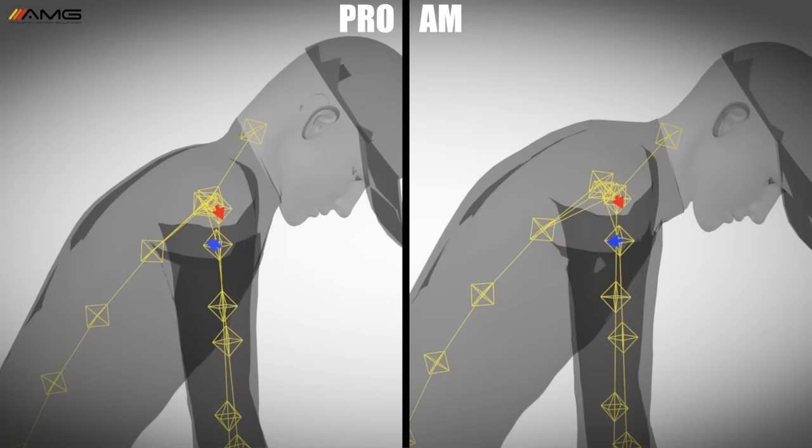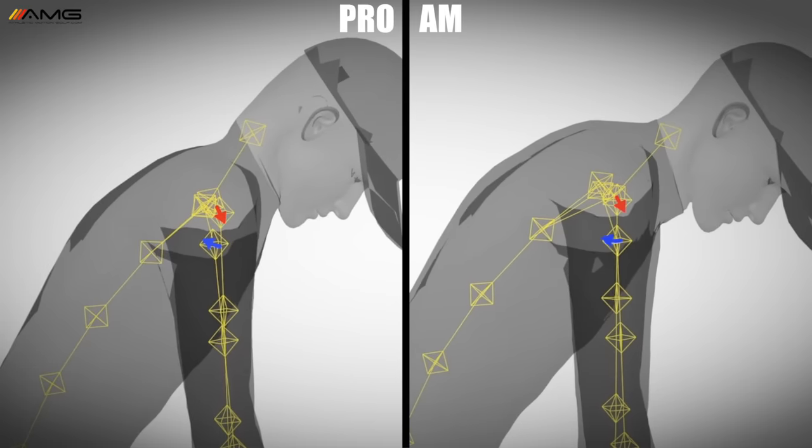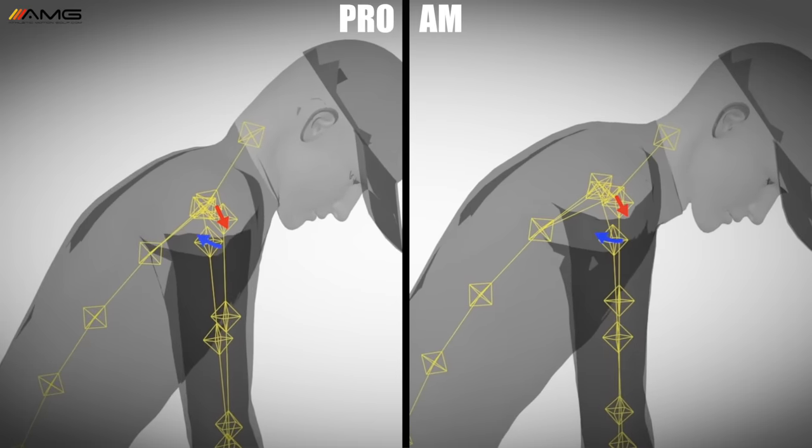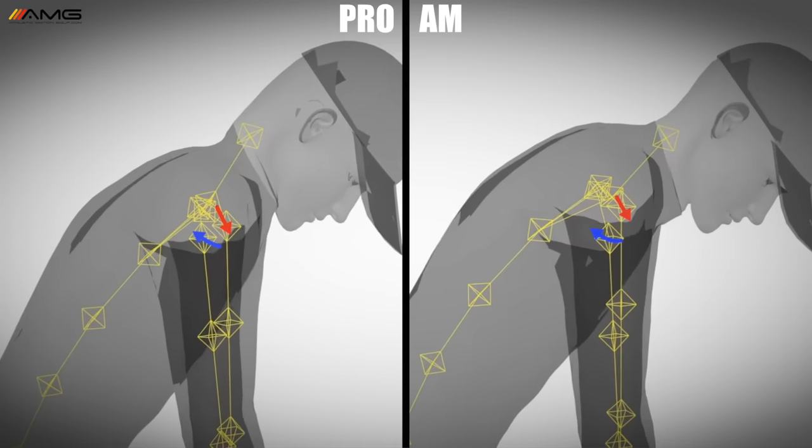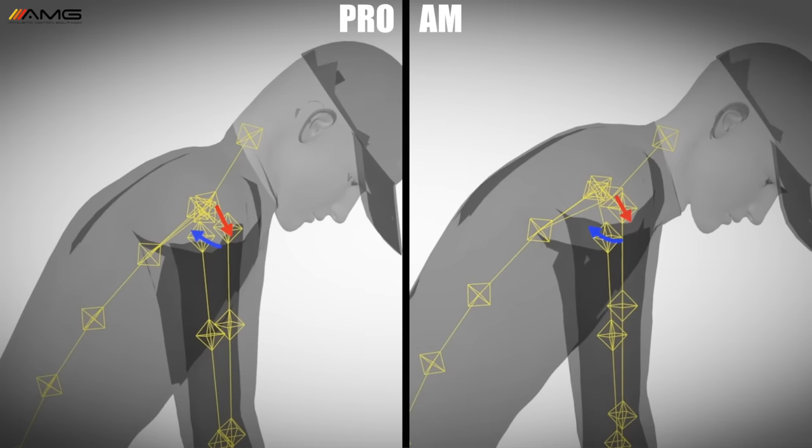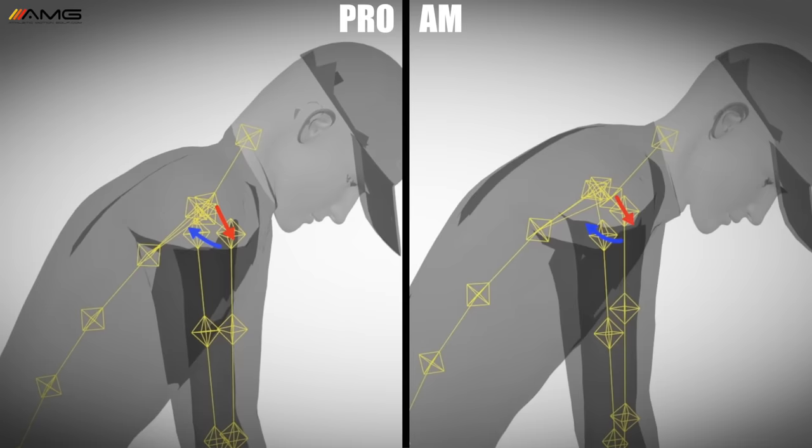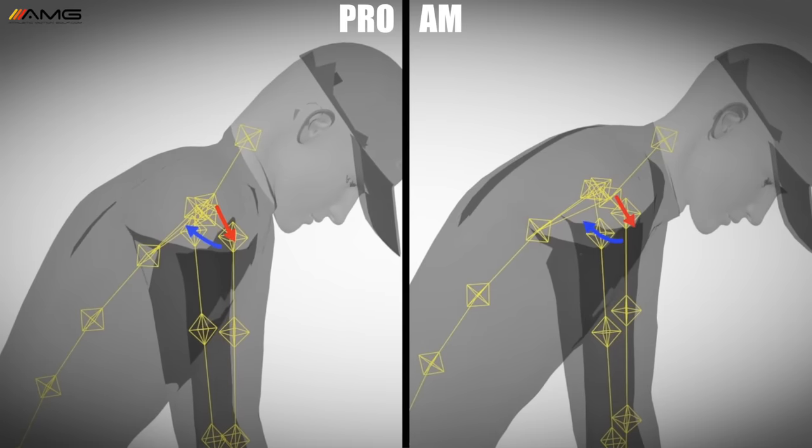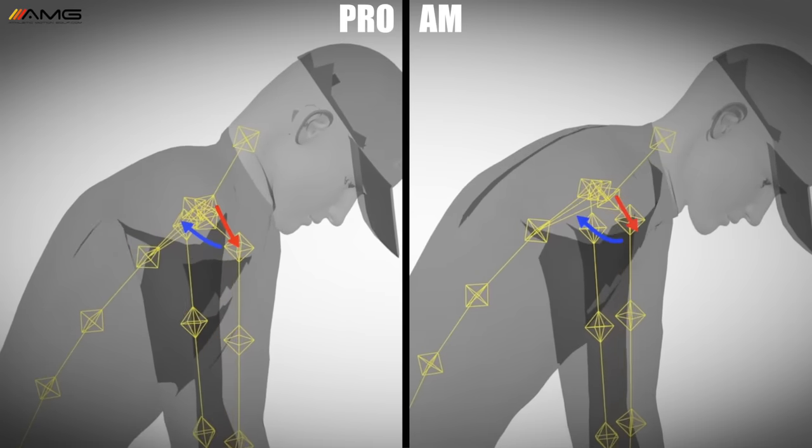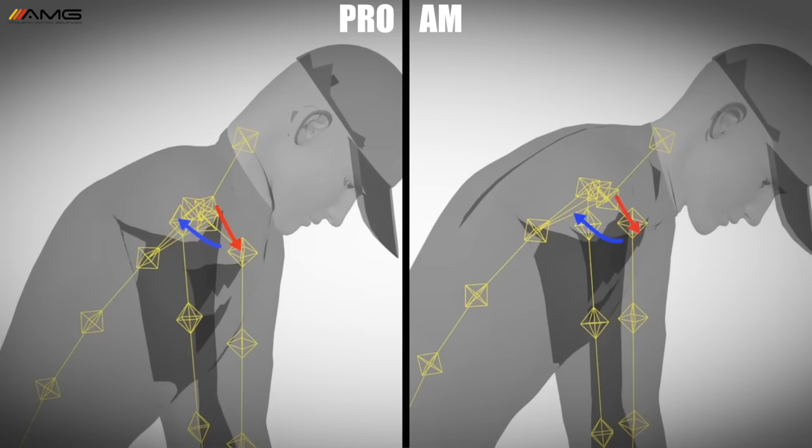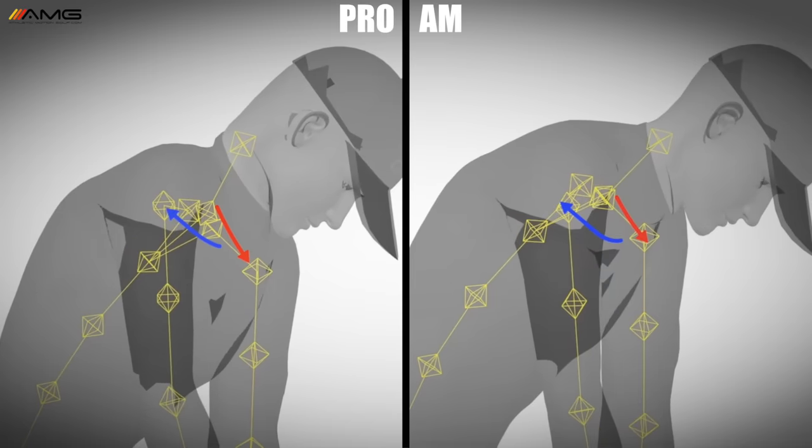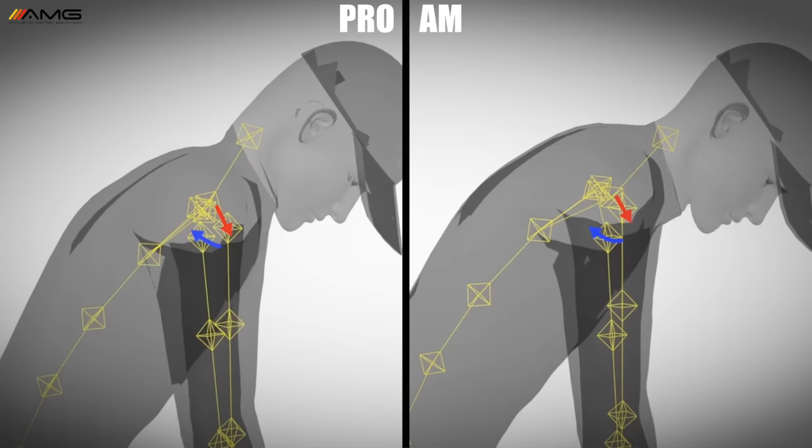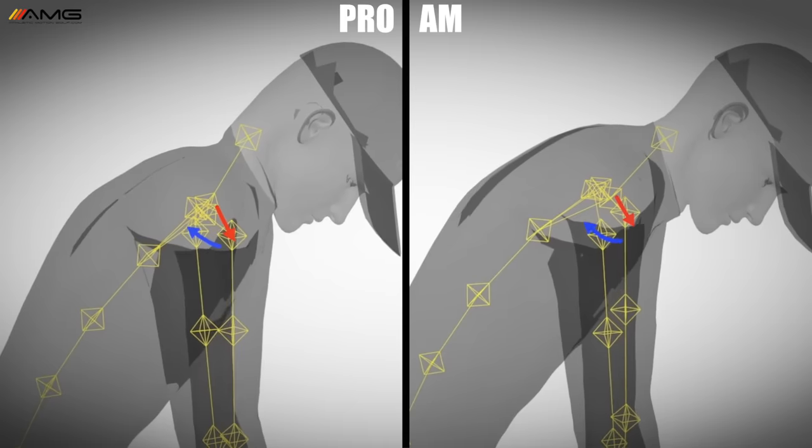We've got our multiple PGA Tour winner here on the left and our amateur on the right. We chose two golfers with very similar body builds, fitness levels, and ball flights. They both try to play the same ball flight, so we're getting as apples-to-apples as we can in this comparison. We're not just singling out one pro versus one amateur, we're showing what we see very commonly amongst the pros compared to the common data for amateurs.